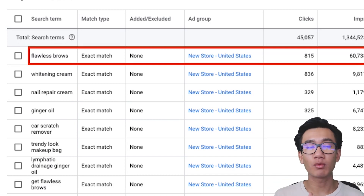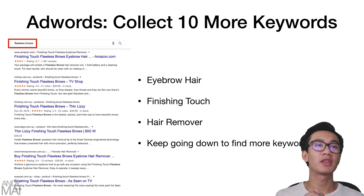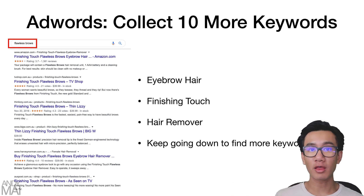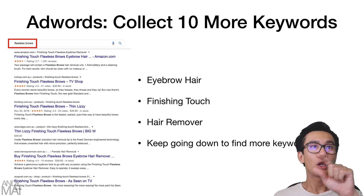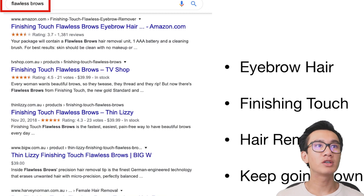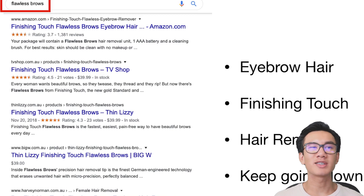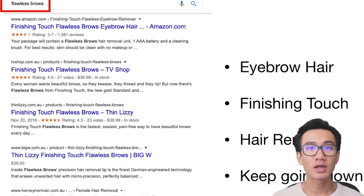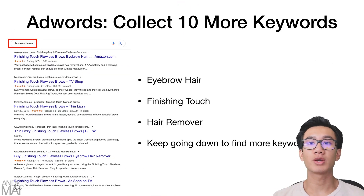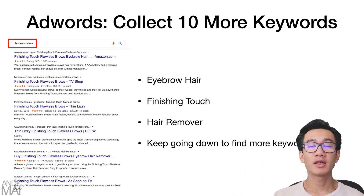What you have to do is scale horizontally and find more similar keywords. If you're running a search campaign, search the exact keyword — 'flawless brow' — on Google and look at the SEO titles and SEO descriptions to find more keywords. For example, you might see 'eyebrow hair,' 'finishing touch hair remover,' 'hair removal unit,' 'beautiful brows.' Scroll down on Google to find more, and collect about ten similar keywords.